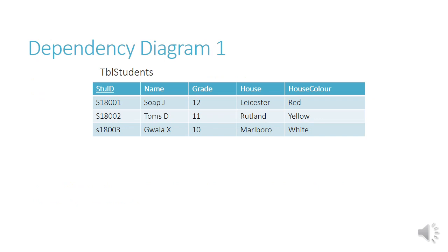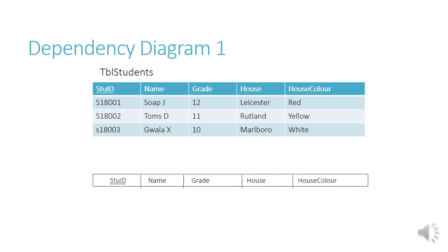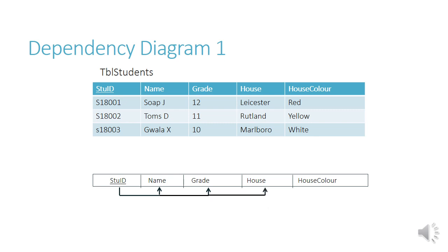So we're going to do a dependency diagram — this is a skill you need to learn. Using the students table, we first draw a block of the top line of the table: a long rectangle with each field in a little block within it. We then look at the dependencies. The name of the student is dependent on student ID, so we draw an arrow from student ID to name. Grade and house are also dependent on student ID, so we carry on with arrows to each of those fields.